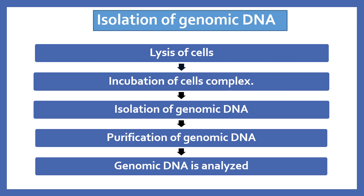Phenol-chloroform mixture has two phases: an aqueous phase and an organic phase. In this step, phenol denatures the remaining protein and keeps the protein in the organic phase. The genomic DNA present in the aqueous phase is again precipitated with absolute alcohol. The genomic DNA is then analyzed on an agarose gel plate. If a good preparation has been done, the whole DNA will be shown as an intact band on the agarose gel.